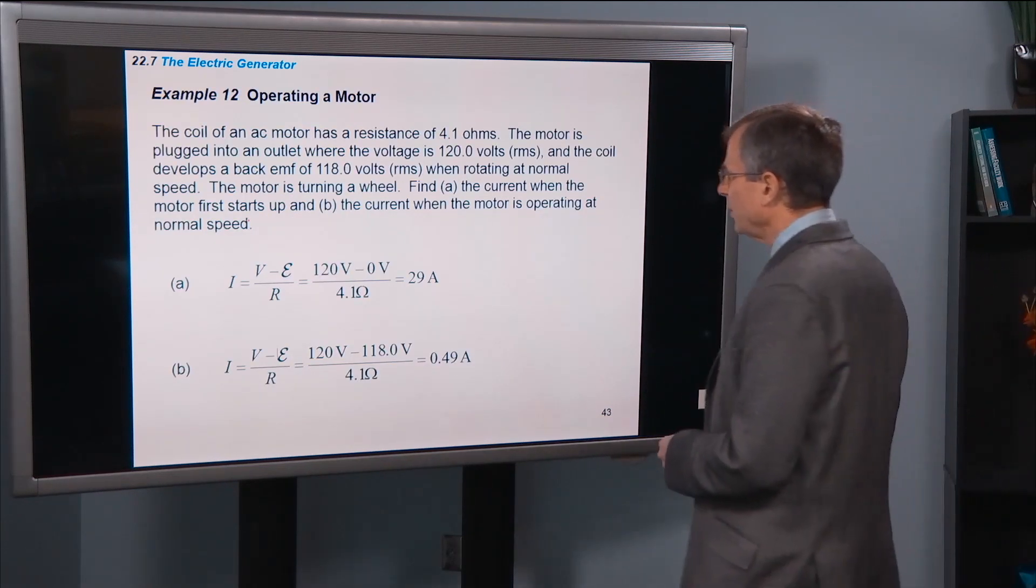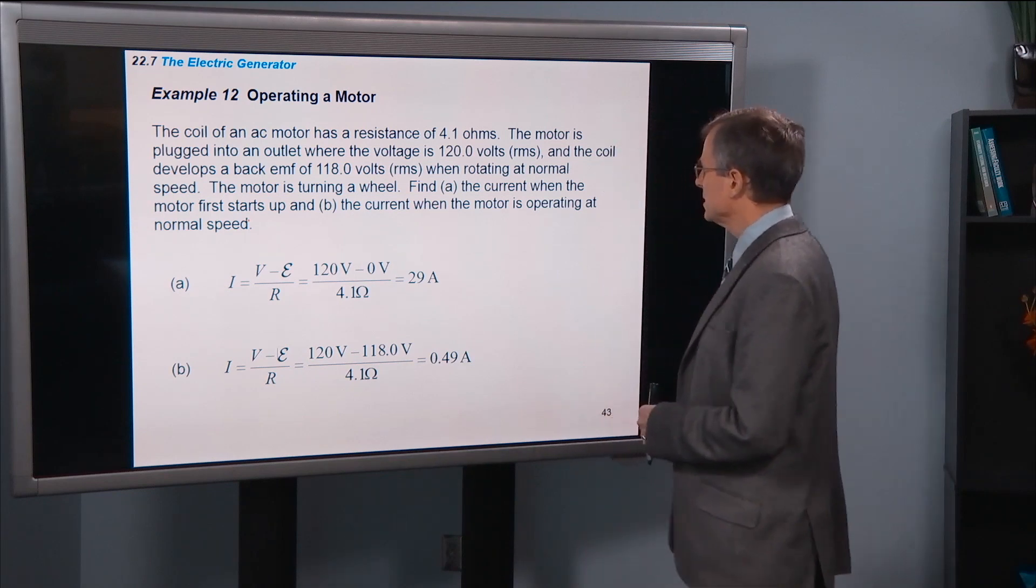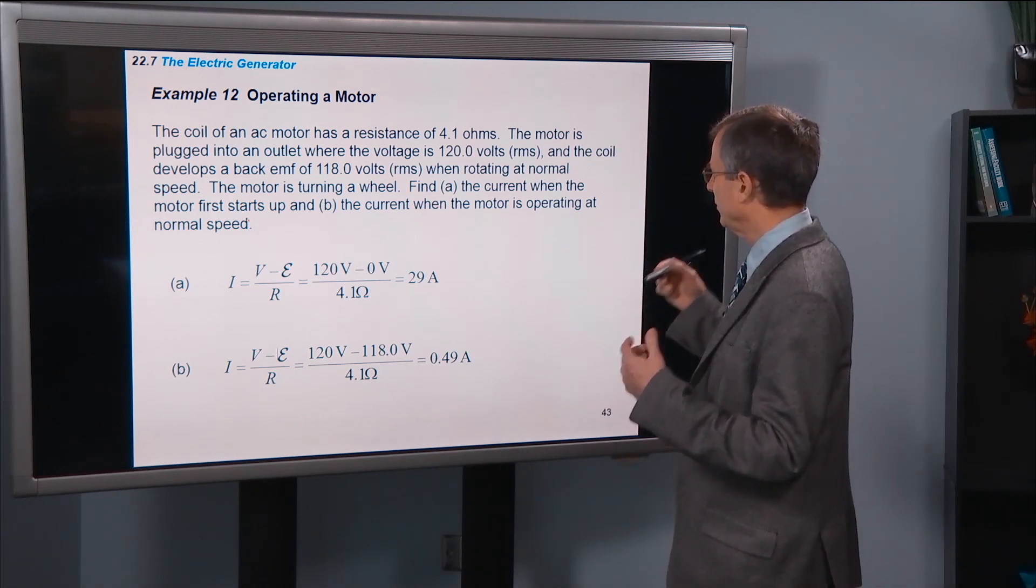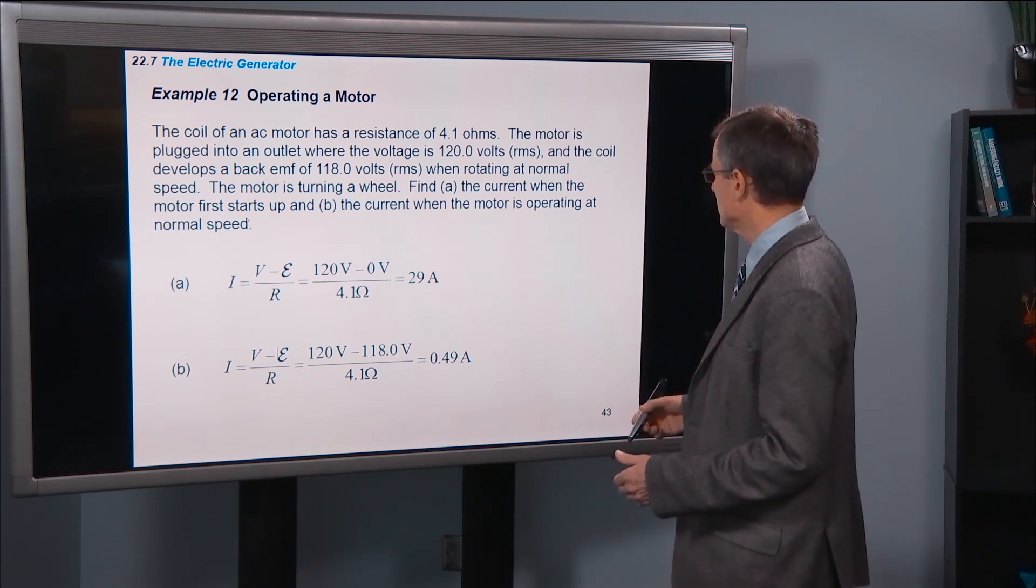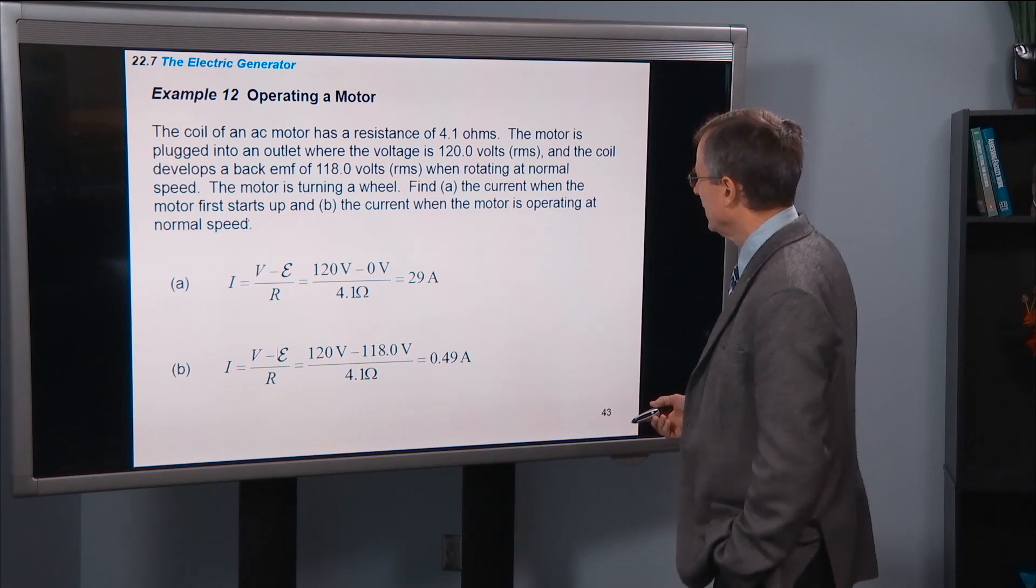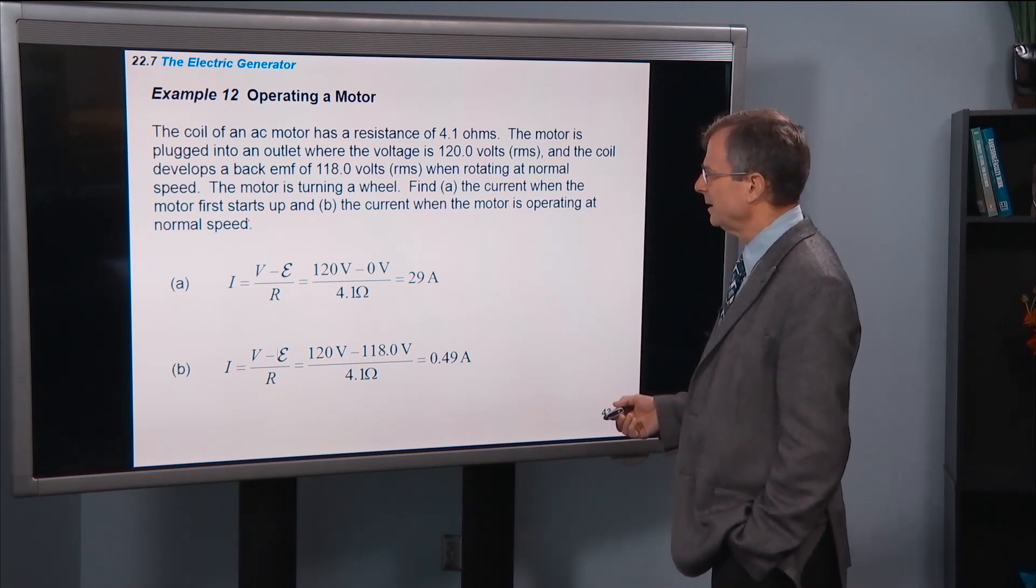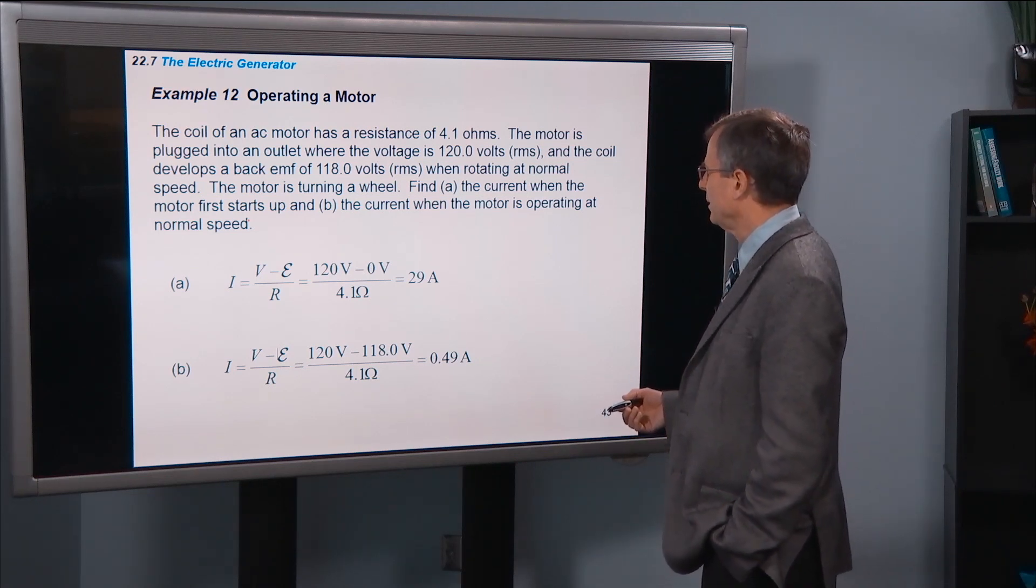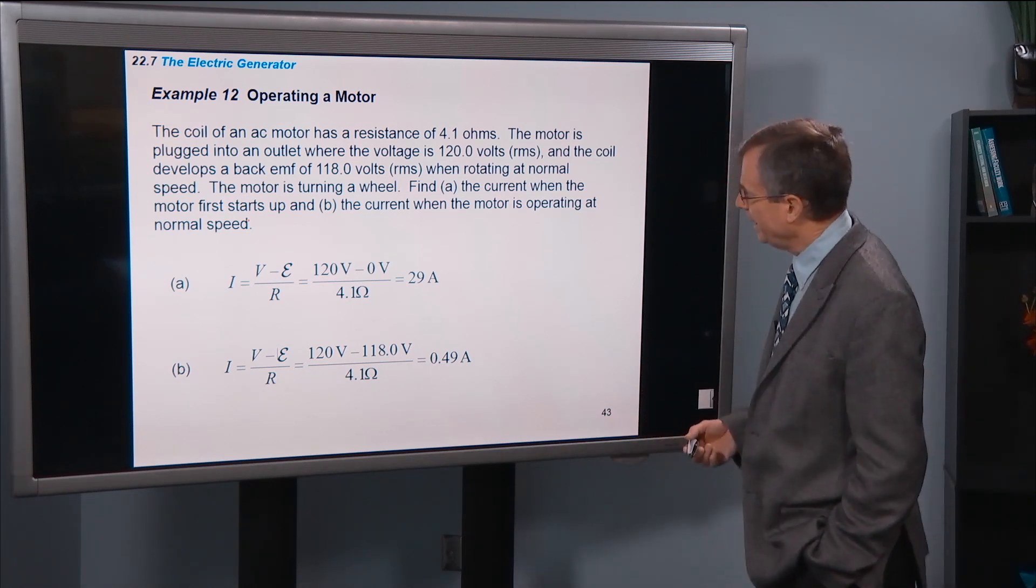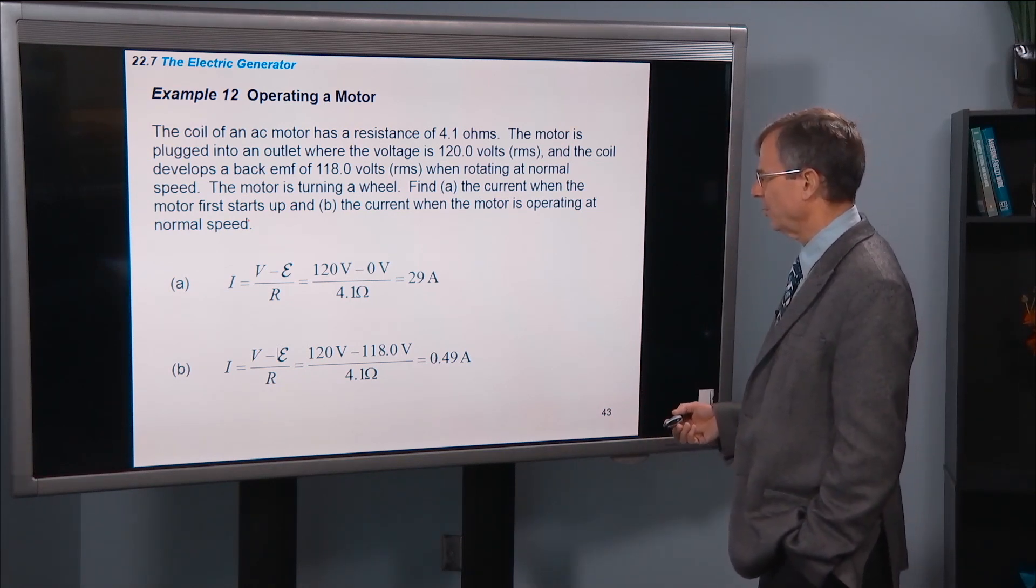A quick example. The coil of an AC motor has a resistance of 4.1 ohms. The motor is plugged into an outlet where the voltage is 120 volts RMS. The coil develops a back EMF of 118 volts when rotating at normal speed. The motor is turning a wheel. Find the current when the motor first starts up, and the current when the motor is operating at normal speed.